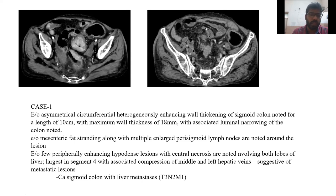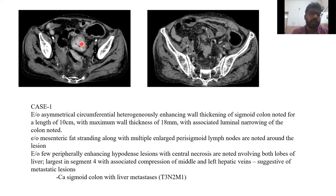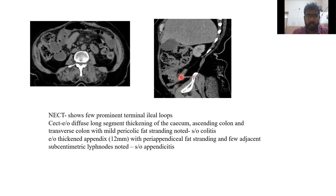This is the first case. We can see asymmetric circumferential thickening involving the sigmoid and descending colon of varying length. In this case, there are also metastatic deposits in the liver — a case of carcinoma sigmoid colon staged as T3N2M1. In another case, there is thick diffuse long-segment thickening of the cecum and ascending colon with features of colitis.